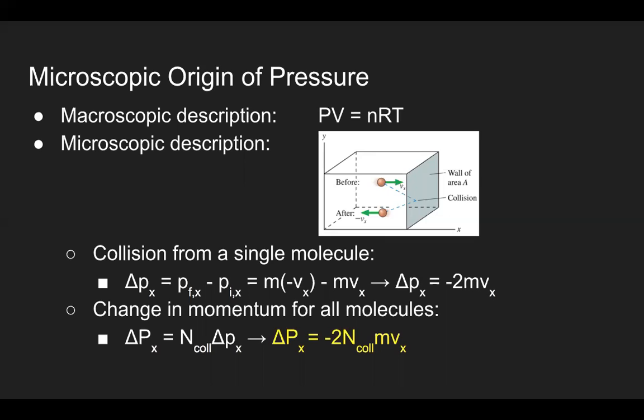To simplify things, we will only focus on the gas molecule moving in only the x direction. Notice the velocities are assumed to be the same magnitude but are in opposite directions. Calculating this change in momentum results in negative 2 times mass times the velocity in the x direction. For the total change in momentum, this change in momentum would simply be multiplied by the total number of collisions of gas molecules inside the container as shown in yellow.